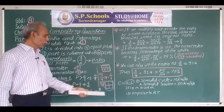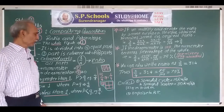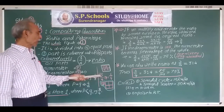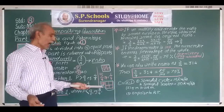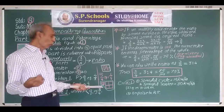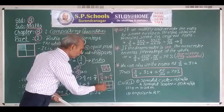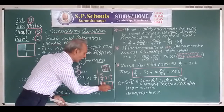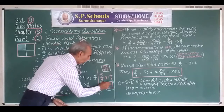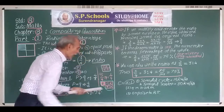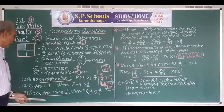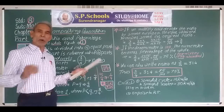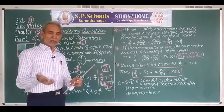Ratio greater than one is the ratio in which more than one whole thing is considered. So when out of four parts we take five, we have to take one whole thing and also divide another whole thing into four equal parts. All these parts are the same — 1, 2, 3, 4, and 5. Ratio equal to one means if we divide a thing into four parts and take all four parts, we have naturally taken the whole thing.